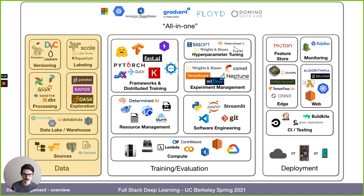From the infrastructure lecture a couple of weeks ago, we focused on the training and evaluation part of the landscape. Today we're going to focus on the data part, which includes sources, data lake warehouses, processing, exploration, labeling, and versioning. We'll start with the sources.